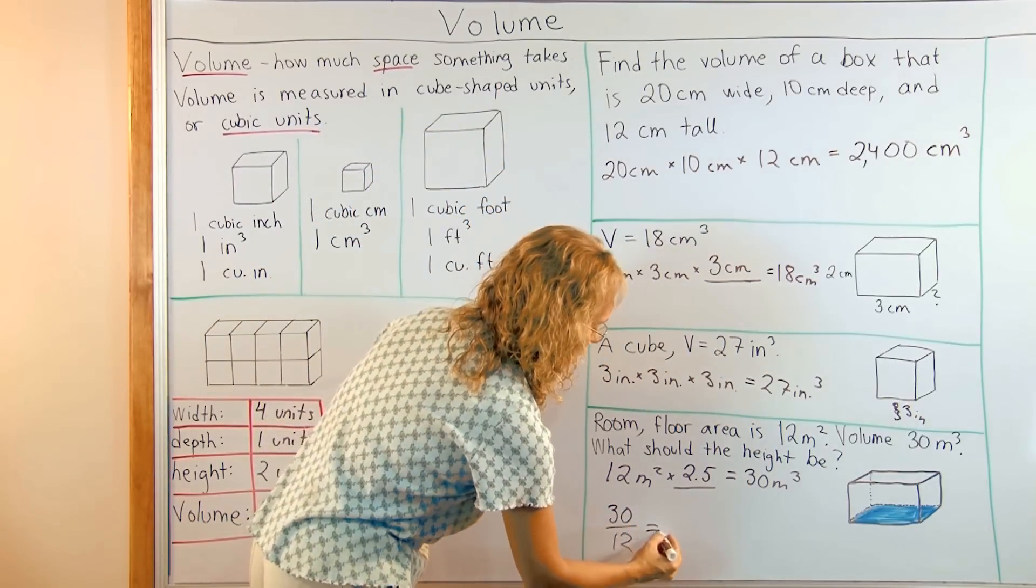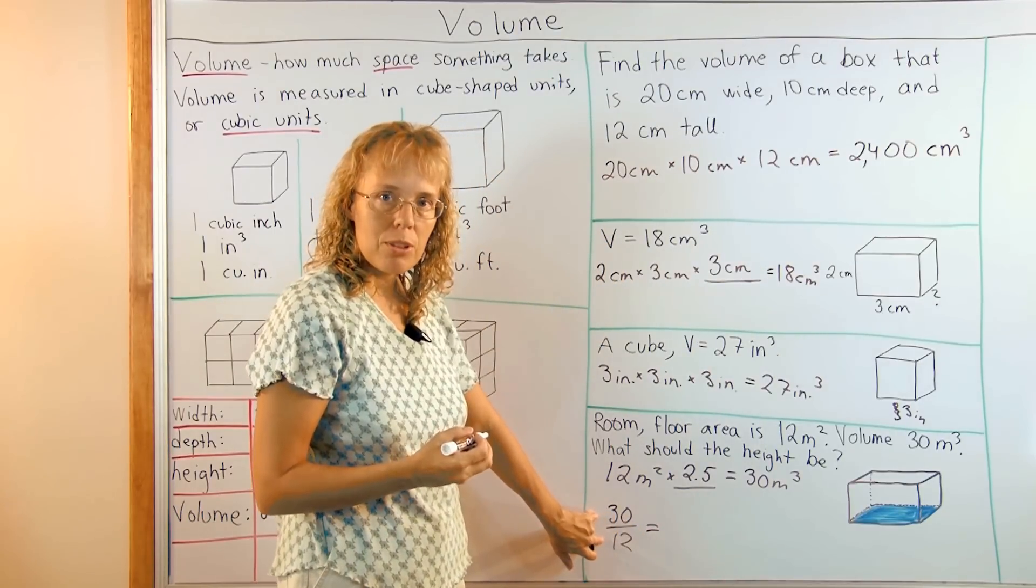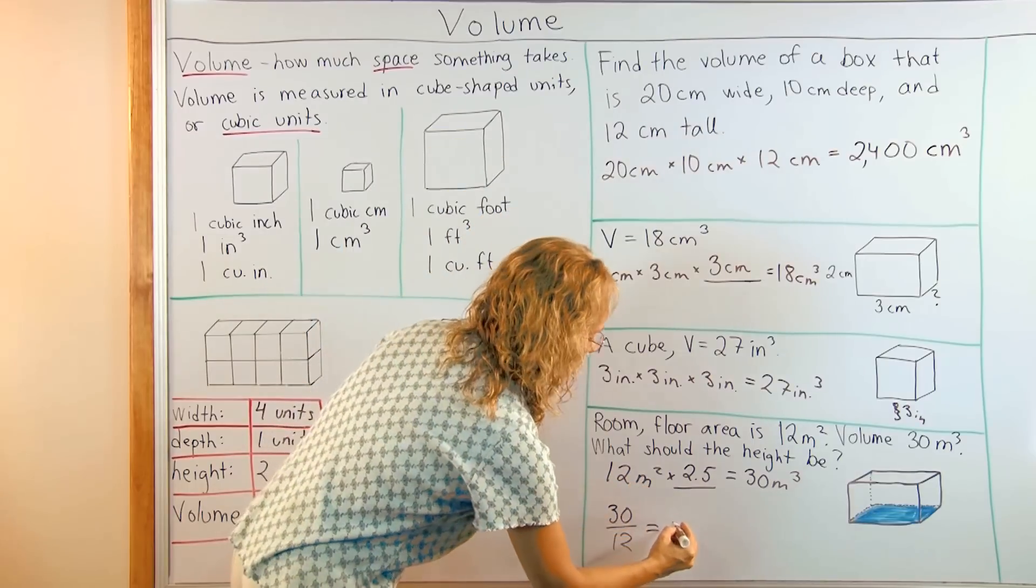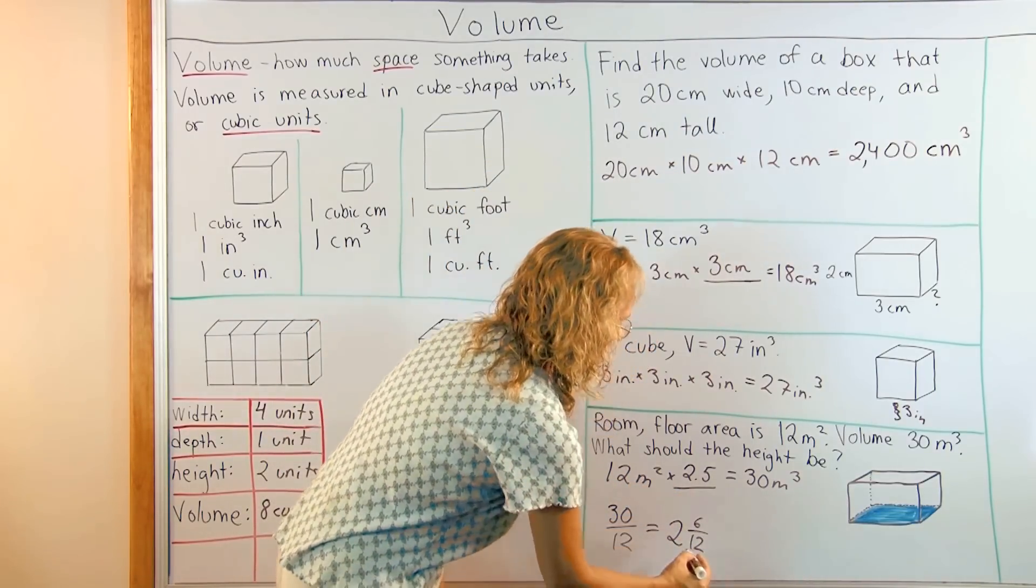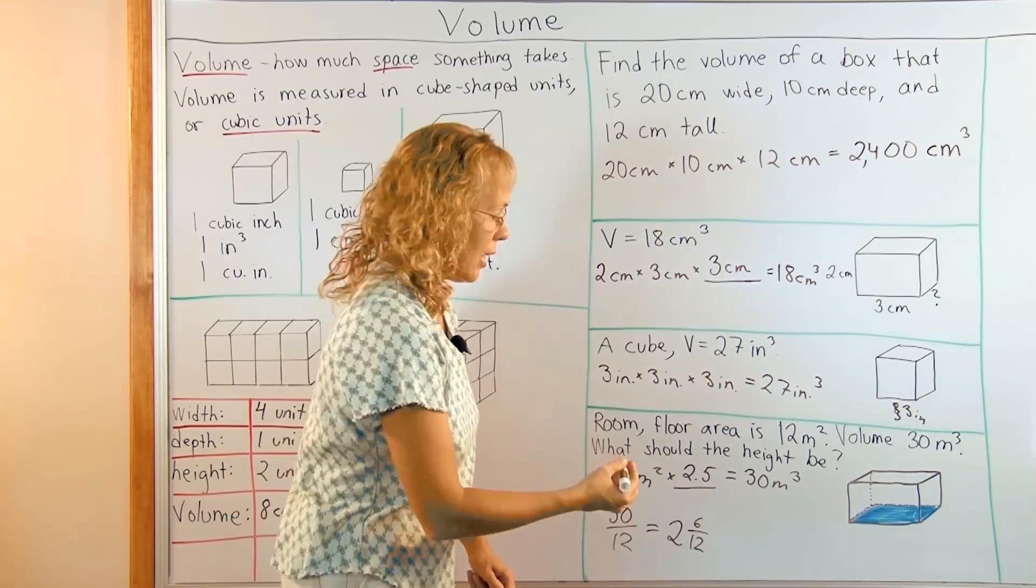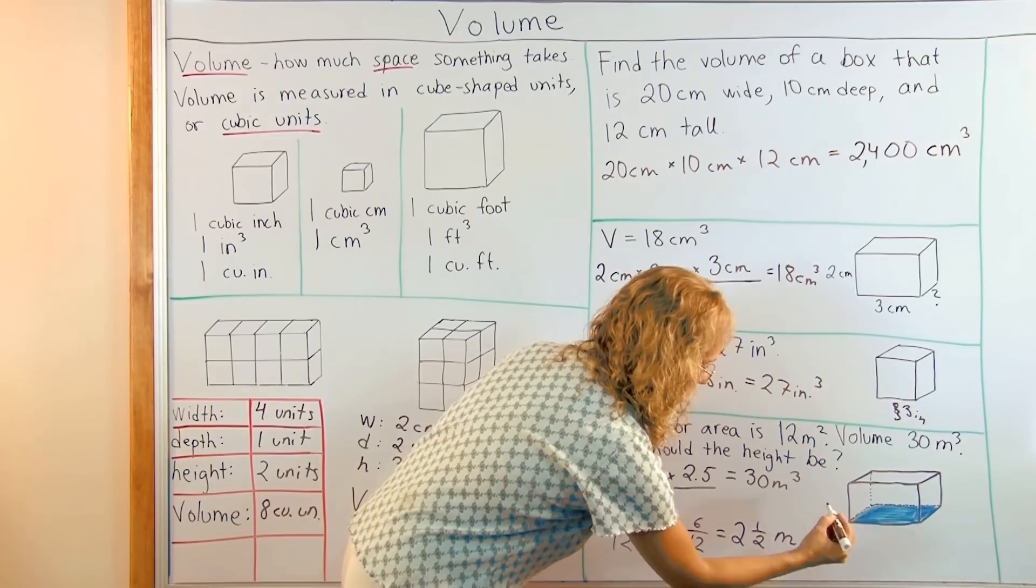Because now we can use what we know about fractions. We can write this as a mixed number first. Thirty twelfths would make two whole and then six twelfths, right? And six twelfths is exactly one half. Two and a half. And this is in meters. The answer is in meters.